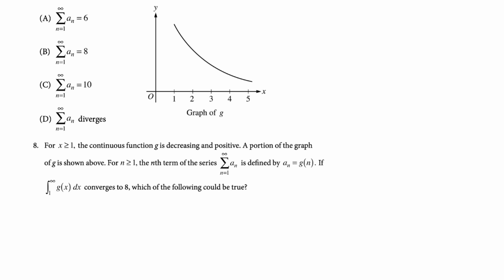Number eight. For x greater than or equal to one, the continuous function g is decreasing and positive. So positive continuous decreasing. So we can use the integral test. A portion of the graph of g is shown above. For n greater than or equal to one, the nth term of the series from one to infinity a sub n is defined by a sub n equals g of n. If the integral from one to infinity of g of x dx converges to eight, which of the following could be true? All right, so first up, if this converges, then we know that the series also converges. So d cannot possibly be the answer.